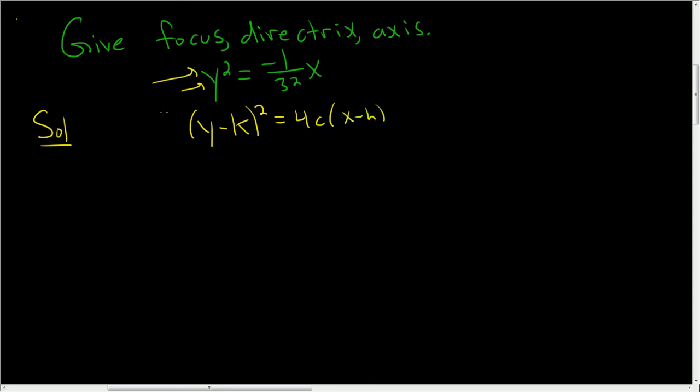Let's make this match. So I'm going to write this again down here. This is (y - 0)² equals, and then we have this piece, so -1/32. And then we have the x, but it'll be (x - 0).